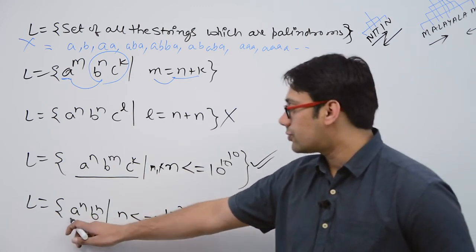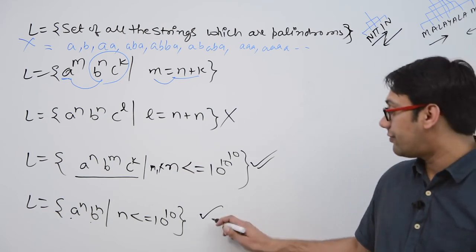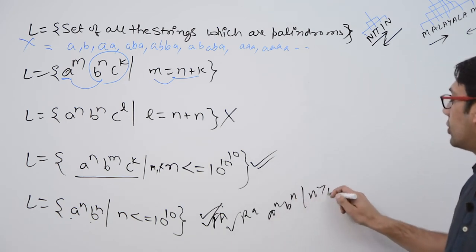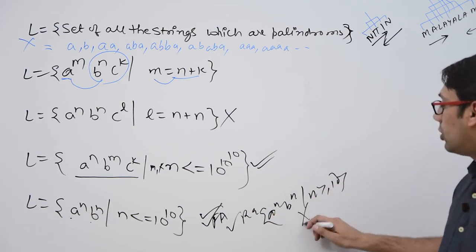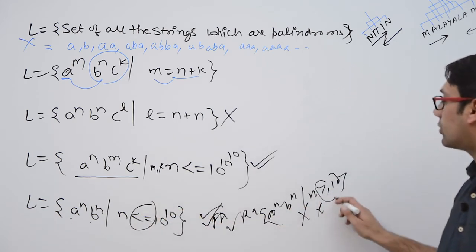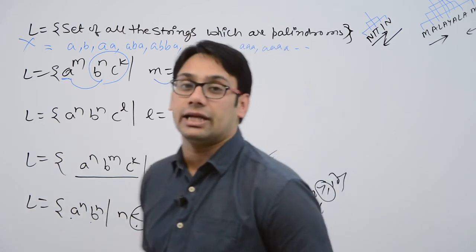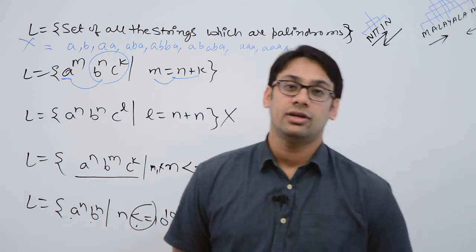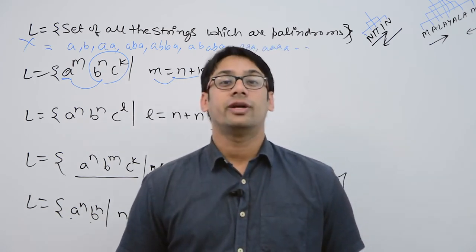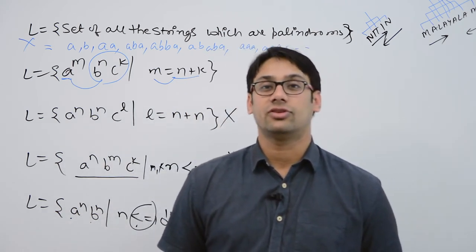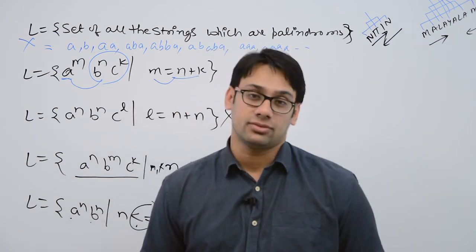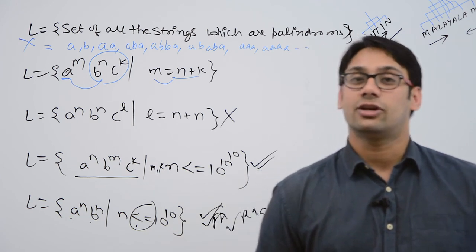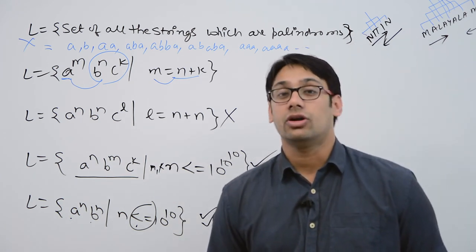Consider a raised to the power n, b raised to the power n, such that n is less than or equal to 10. For this, finite automata is possible, and therefore regular expression is also possible. But if the string is a raised to the power n, b raised to the power n, such that n is greater than or equal to 10, for this, neither finite automata nor regular expression is possible. The difference is: one uses 'less than or equal to' making the string length finite, and the other uses 'greater than or equal to' making it infinite. If all possible strings have a finite maximum length, you can give a regular expression and make a finite automata. But if the length is infinite and there is a comparison between lengths, you may not be able to create a finite automata, so those languages are not regular.